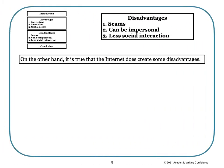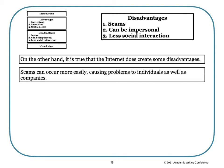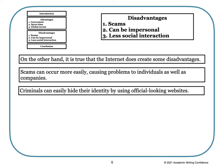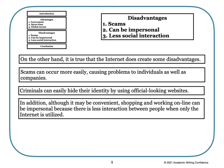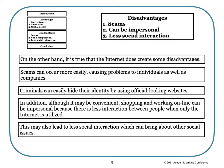Now we need to write about the disadvantages. We might start our paragraph like this: 'On the other hand, it is true that the internet does create some disadvantages. Scams can occur more easily, causing problems to individuals as well as companies. Criminals can easily hide their identity by using official-looking websites. In addition, although it may be convenient, shopping and working online can be impersonal because there is less interaction between people when only the internet is utilized. This may also lead to less social interaction, which can bring about other social issues.' Again, try using transition words such as 'on the other hand' or 'in addition' to connect your ideas.